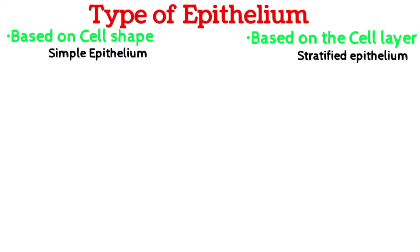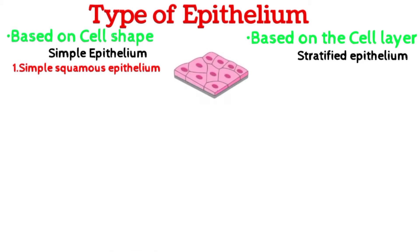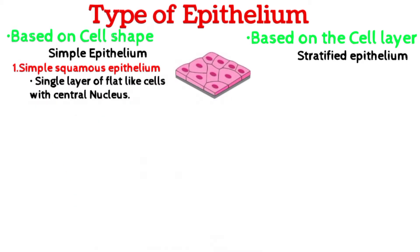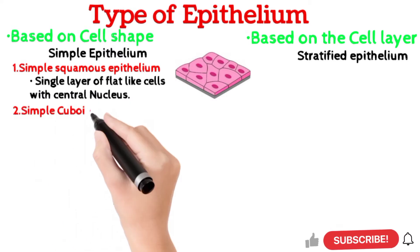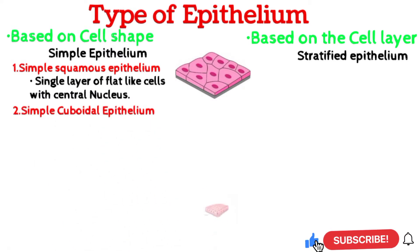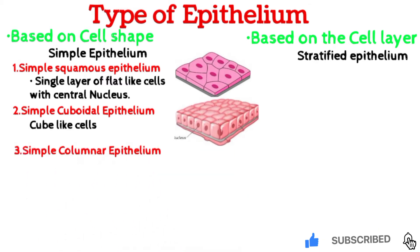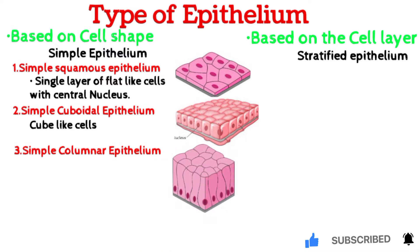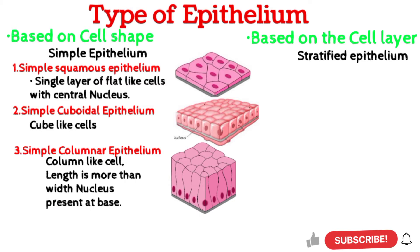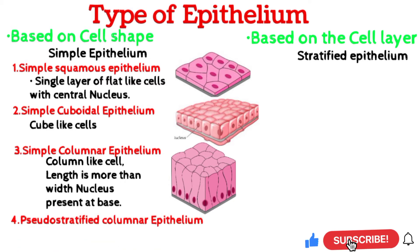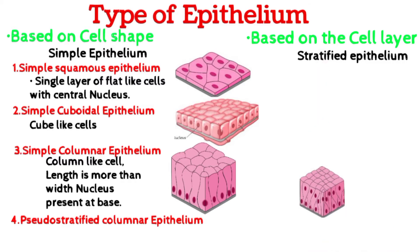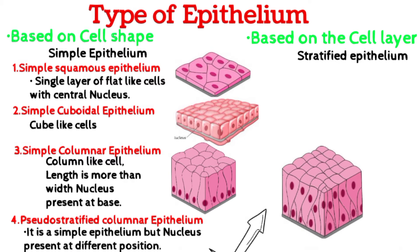The first type is simple squamous epithelium — it is a single layer of flat cells with the nucleus present in the center. Simple cuboidal epithelium consists of cube-like cells with the nucleus in the center. Simple columnar epithelium has column-like tall cells with the nucleus present at the base. Pseudo-stratified columnar epithelium is a simple epithelium tissue but with nuclei present at different positions, so it looks like stratified. All cells rest on the basement membrane.